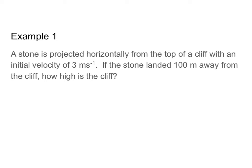Example number one: a stone is projected horizontally from the top of a cliff with an initial velocity of 3 meters per second. The stone landed 100 meters away from the cliff. How high is the cliff? Let's draw our picture — here is our cliff, here is our stone, and it's going to get projected horizontally at 3 meters per second, following a parabolic path all the way down to the ground, landing 100 meters away from the base of the cliff. We want to figure out the height of the cliff, so we'll separate our situation into an x direction and a y direction.